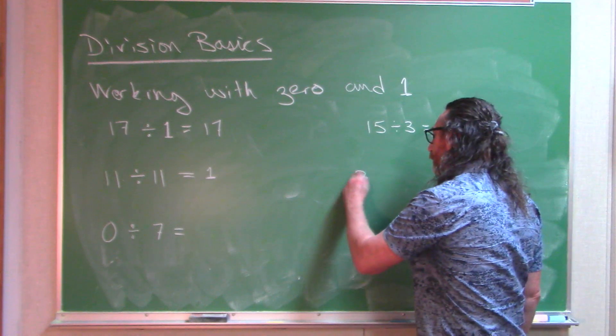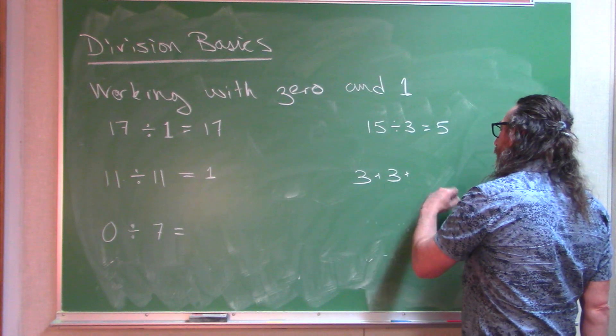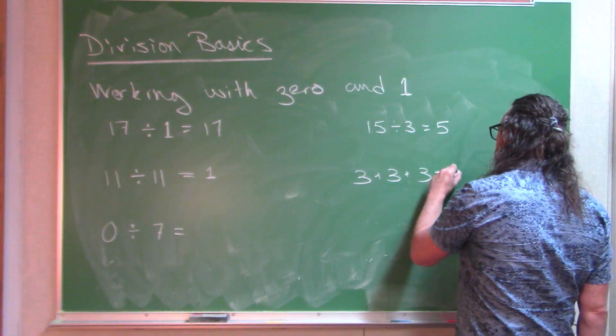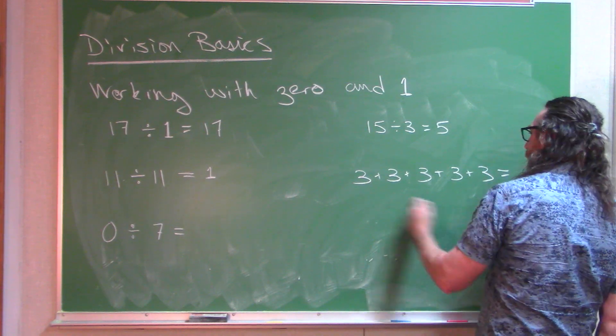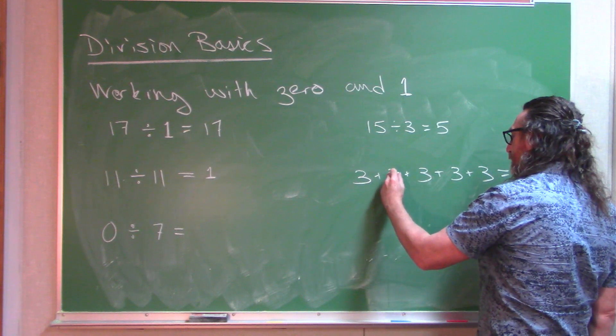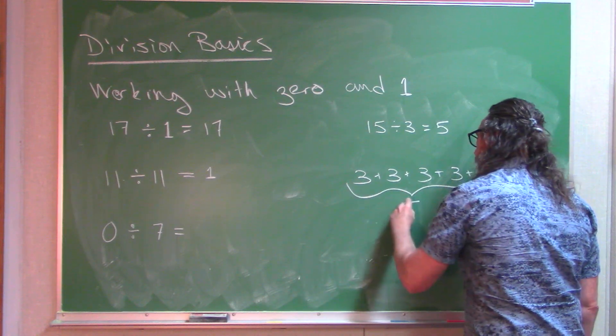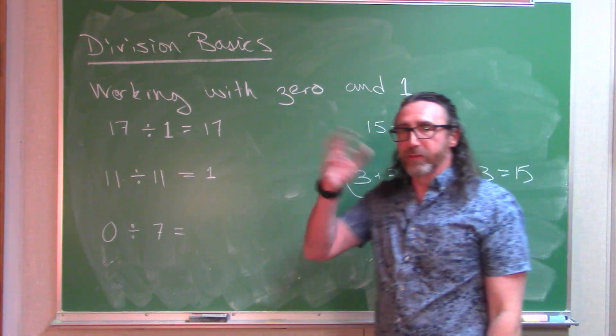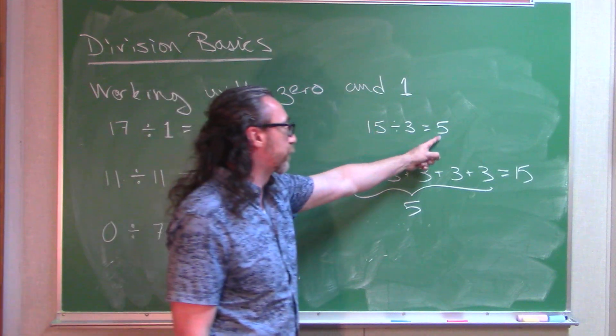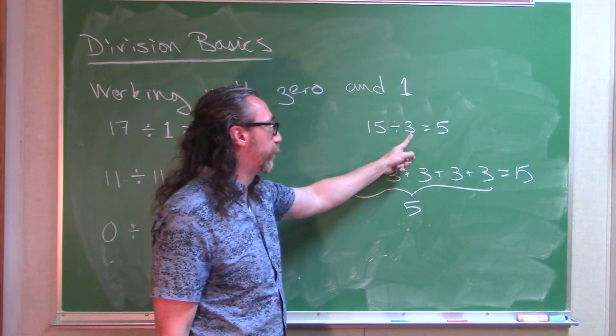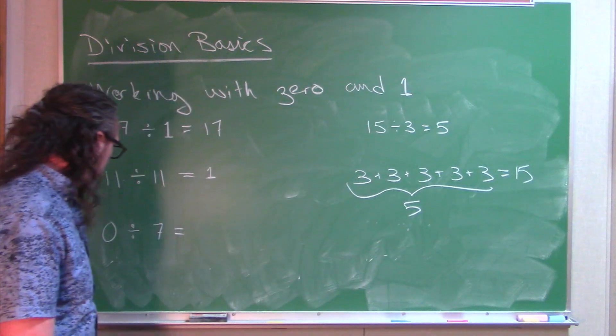Keep on adding 3's until you get to 15. So you have 3, 6, 9, 12, 15. You need 5 3's to get to the 15. So this is, how many of that do you need to get here? So here we're talking, how many 7's do I need to throw into the mix to get 0?